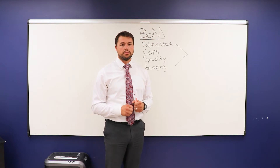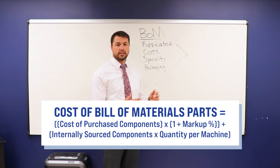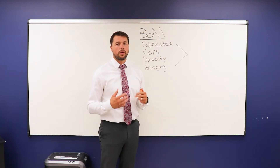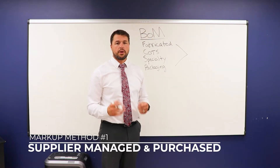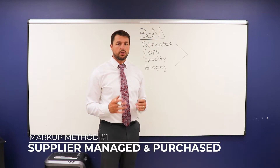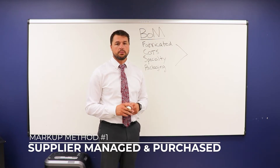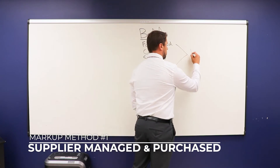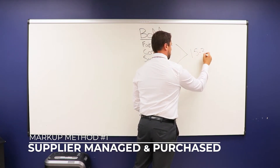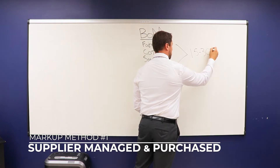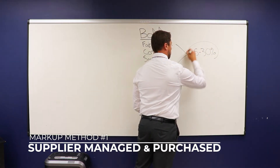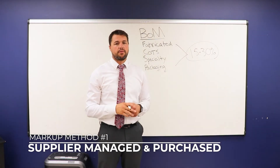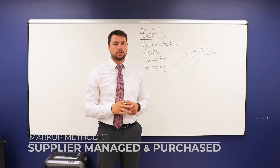By taking the value of these items we can apply a factor to get the necessary costs. The factor depends on a few things — first, whether an item will be supplier managed and purchased. In this method the contract manufacturer will purchase, manage, and inventory the items. This depends on factors like company business models or project complexity.